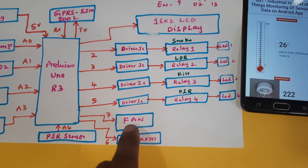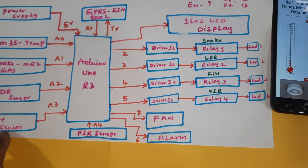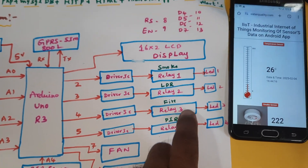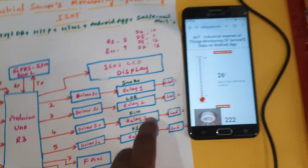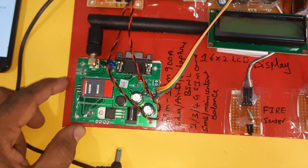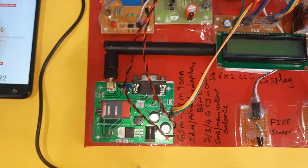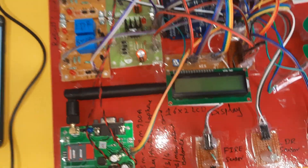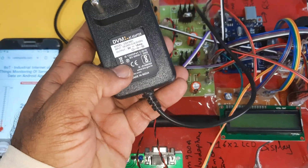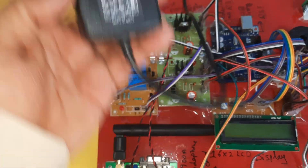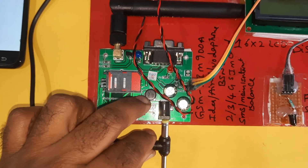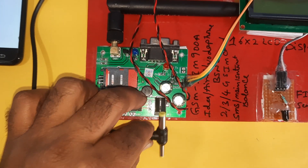When any sensor is detected, the red LED should be on, sending SMS alert and email alert. If temperature crosses the threshold, the fan should turn on. If the fire sensor detects fire, the alarm turns on and the LED also turns on. We are using a GSM SIM900A module with a 0 to 9 volt adapter power source. Now we are going to give the power supply.